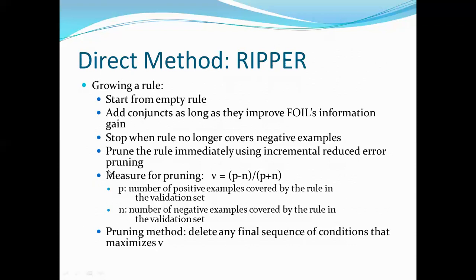RIPPER's growing phase: start with an empty set and add conjuncts as long as they improve FOIL information gain, stopping when the rule no longer covers negative examples. Then prune using incremental reduced error pruning: V = (p−n)/(p+n), where p and n are positive and negative examples in the validation set. This removes unnecessary conjuncts.